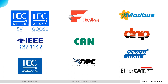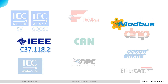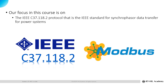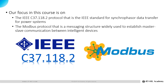There are several communication protocols utilized in different industries. Real-time simulators can emulate industry standard communication protocols to enable users to perform realistic real-time simulations. Our focus in this course is on two protocols: the IEEE C37.118.2 protocol, which is the IEEE standard for synchrophasor data transfer for power systems, and the Modbus protocol, a messaging structure widely used to establish master-slave communication between intelligent devices.